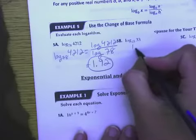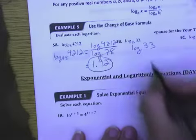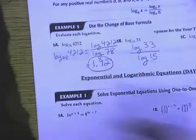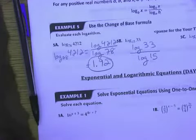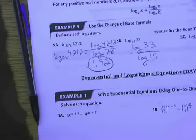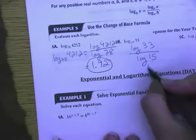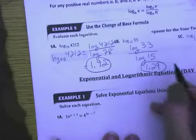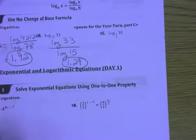It's just a formula. So this one will equal the log of 33 over the log of 15. And then you're just typing it into your calculator. And that will give me approximately 1.29. Pause the video for the Your Turn Part C below.